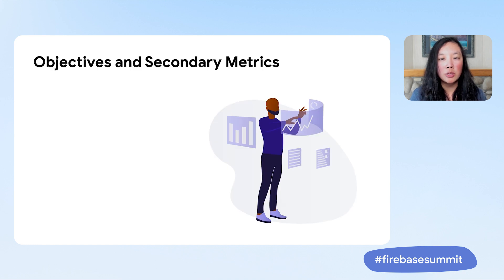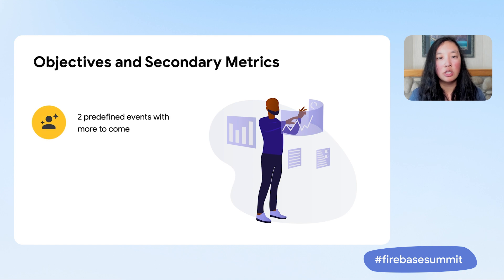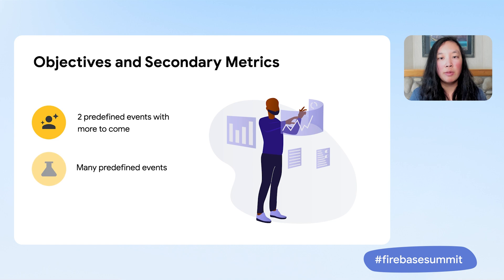Related to optimizing an objective and using the outcome, both A-B testing and personalization have built-in and custom objectives and secondary metrics to measure. These secondary metrics just provide information, as they do not impact results. A secondary metric measured for personalization has no impact on which alternative is served to a user, and A-B testing does not factor it into account when determining which variant is best. Personalization currently has two predefined events to measure — user engagement time and ad clicks — and more will be added over time. A-B testing has many predefined events from which you can choose.